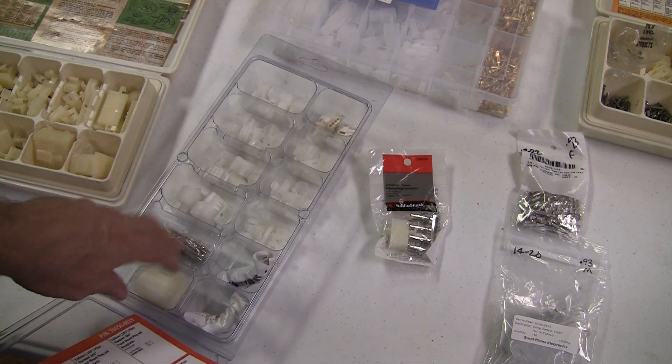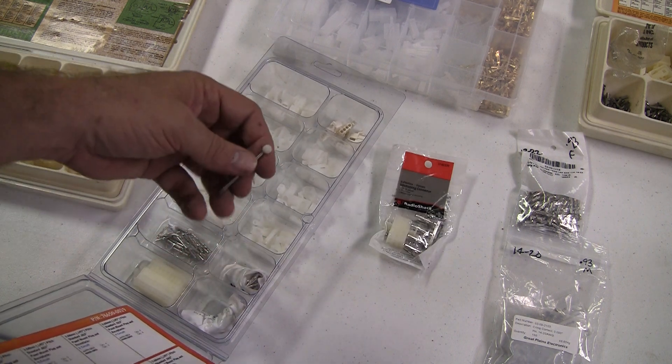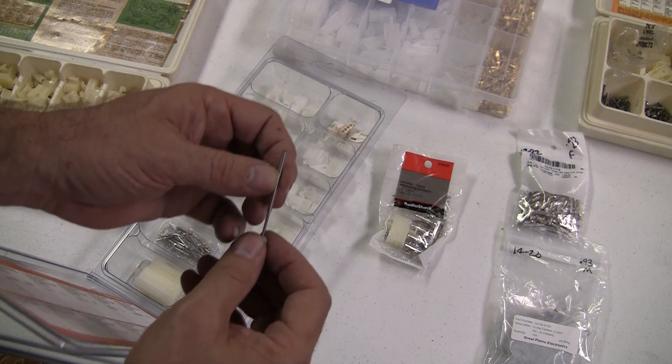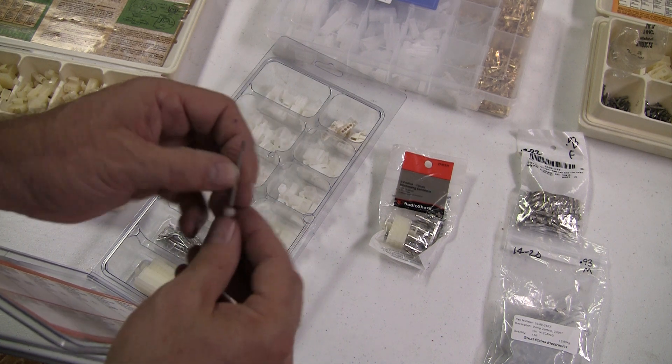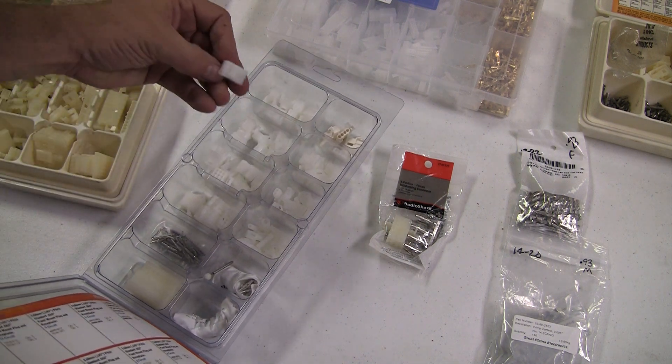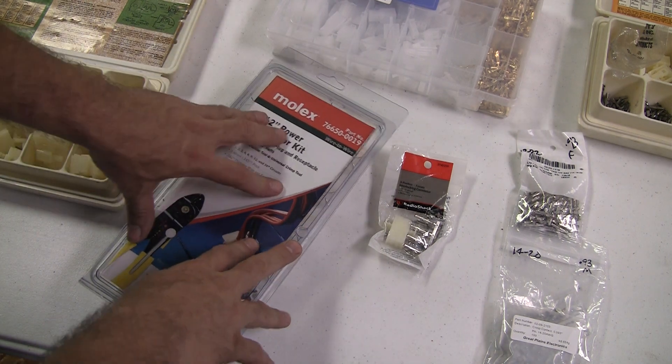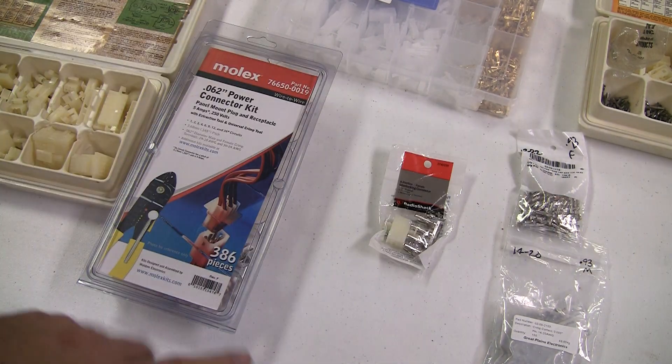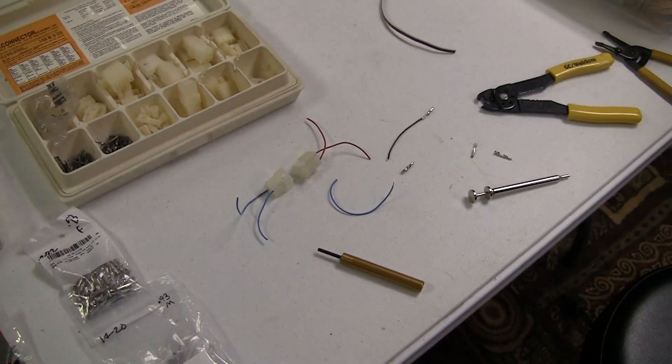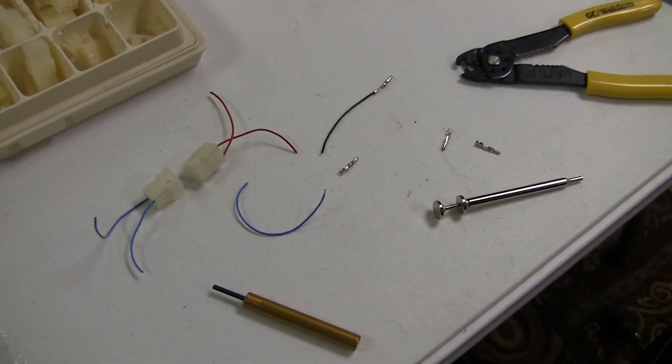This one is for 0.062, and it comes with some male and female pins. It also has the extractor tool. And you'll see here, there's two different tools where there's like a thing and you push it in to extract the pin. And I'll demonstrate that. And this has got different connectors for different numbers of connections and things like that.